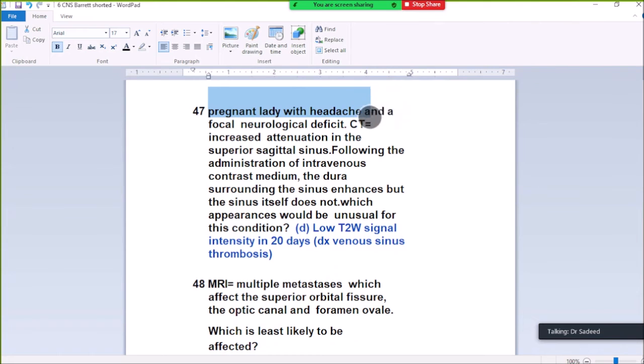Question 47. Pregnancy with headache and focal neurological deficit. CT shows increased attenuation of the superior sagittal sinus. Following administration of intravenous contrast medium, the dural sinus enhances but the thrombus itself does not enhance. What would be unusual for this condition? No T2 signal hyperintensity at 20 days. After 20 days there should be high T2 signal intensity, so no T2 signal hyperintensity at 20 days is unusual.